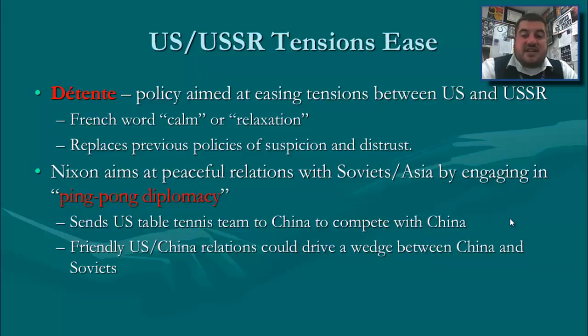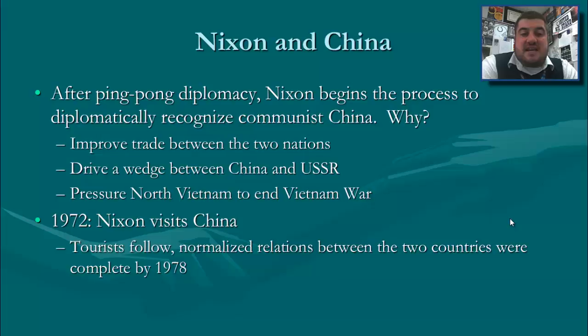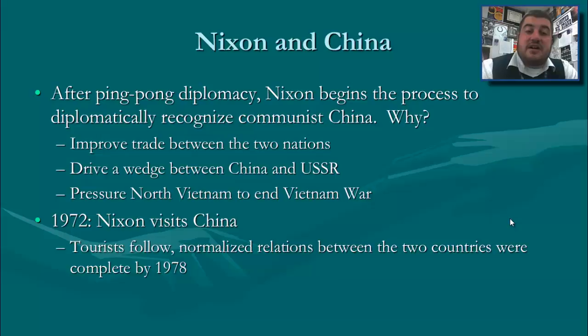Nixon aims at peaceful relations with the Soviets by engaging in ping pong diplomacy — this is the scene in Forrest Gump where he's on the national ping pong team. At the invitation of China, he sends the U.S. table tennis team to China; they are the first Americans to visit China since 1949. He does this because becoming friends with communist China could drive a wedge between China and the Soviet Union. Nixon then begins the process to diplomatically recognize communist China for three reasons: they are a growing nation that could improve trade, it would drive a wedge between the two communist friends, and it could pressure North Vietnam to end the Vietnam War.